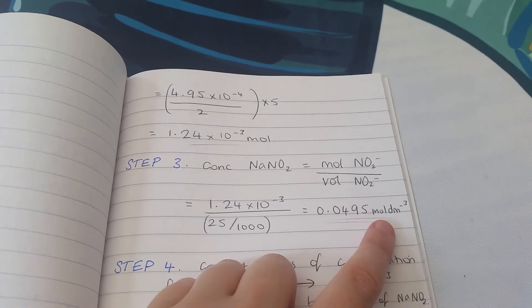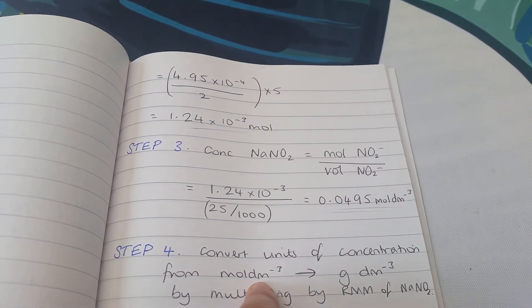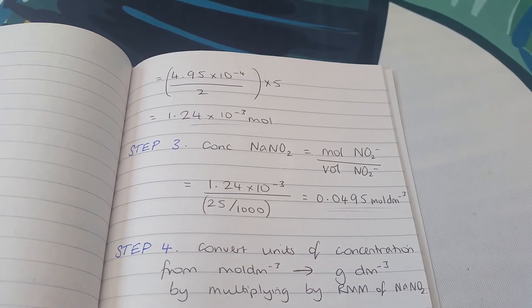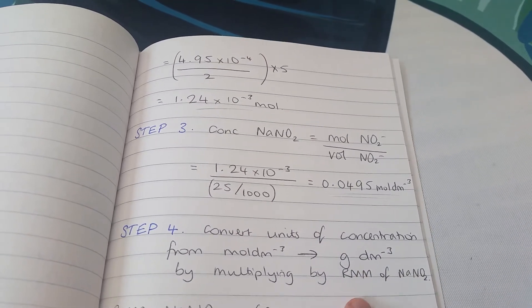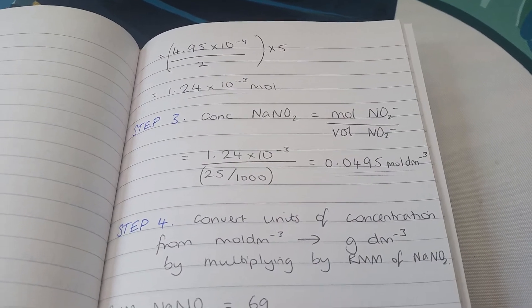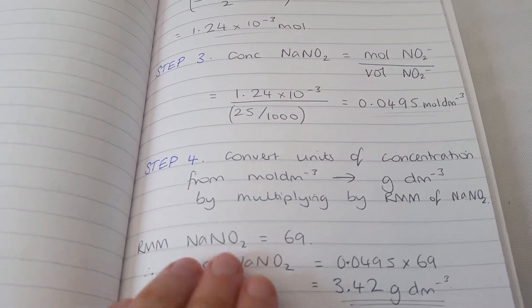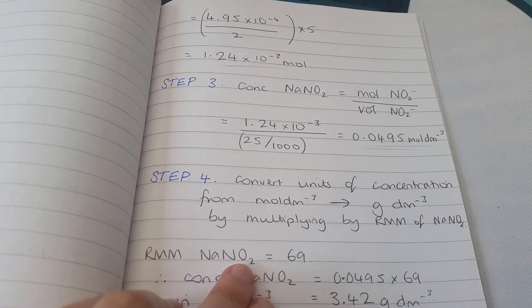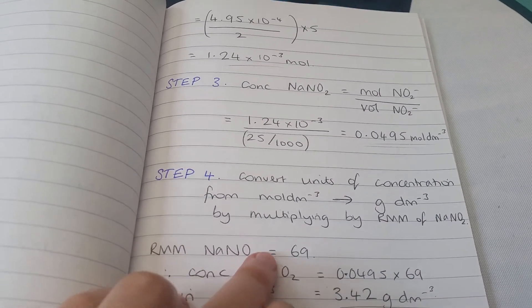We need to convert in our final step from mol/dm³ to g/dm³, and the way we do this is to multiply by the relative molecular mass of the compound. Remember to use the full sodium nitrite compound, not just the nitrite ion.